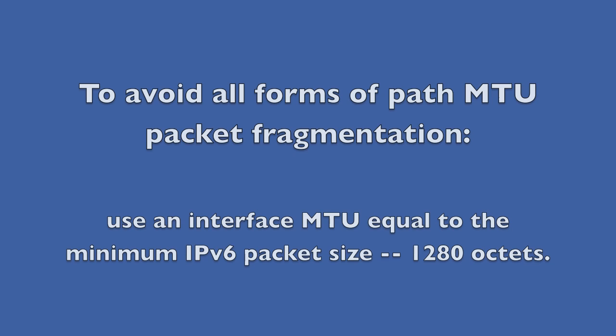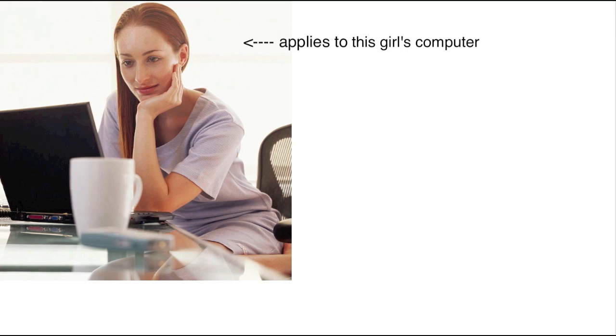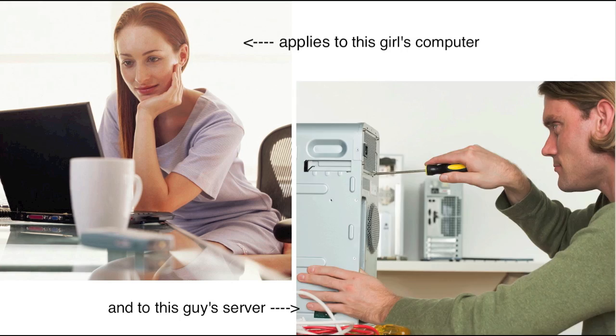So what does Jeff Hudson recommend? If you want to avoid all forms of path MTU packet fragmentation, the answer is to use an interface MTU equal to the minimum IPv6 packet size — 1280 octets. This advice would apply to clients using dual stack services, as well as dual stack web servers themselves.